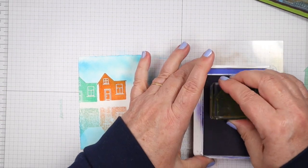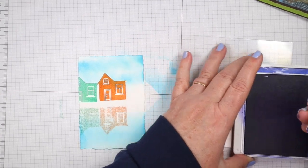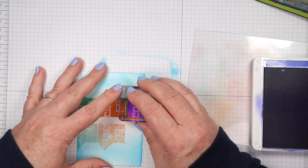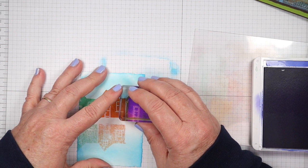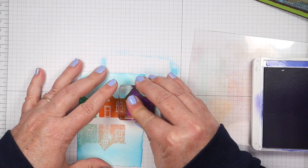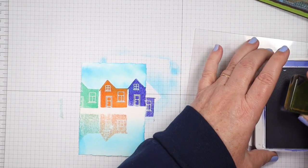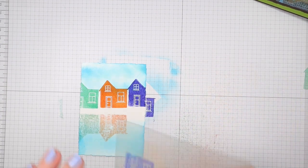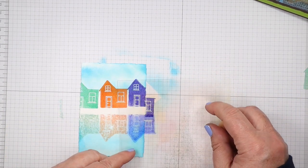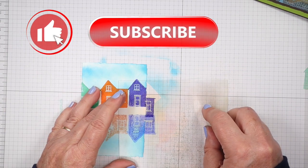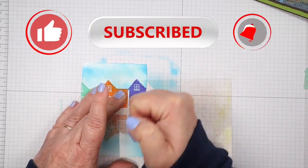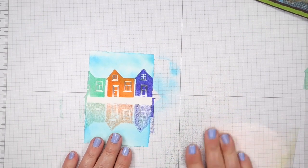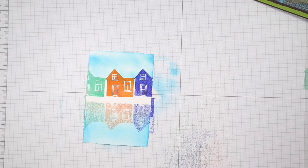So I'm just going to stamp it, just like we did the other two. Stamp it on the plastic window sheet. Flip it over. Give it a rub. So there are our reflections. That was pretty easy, right?